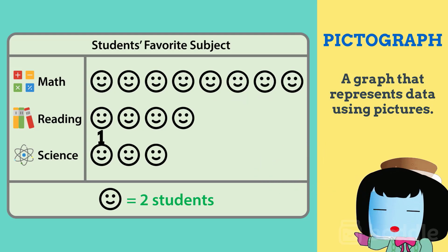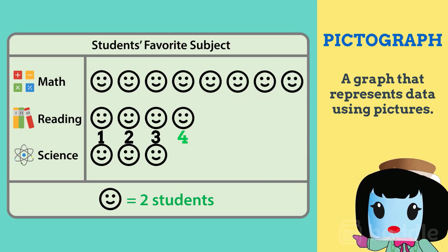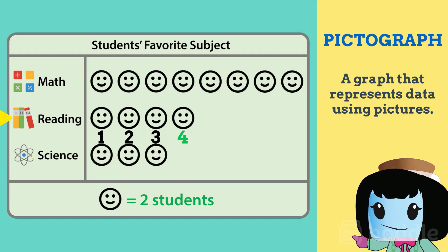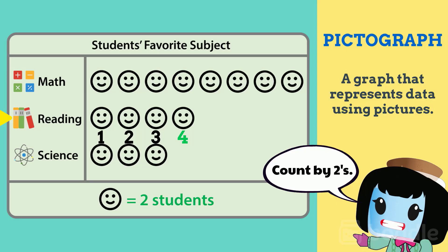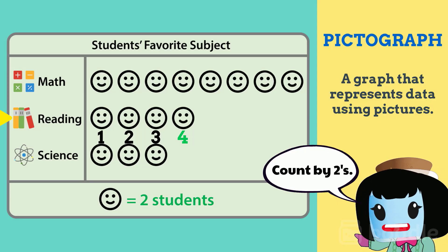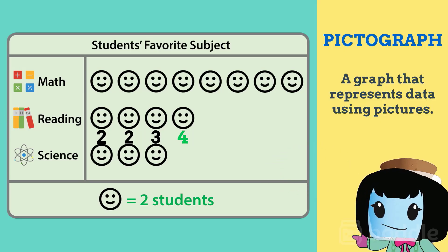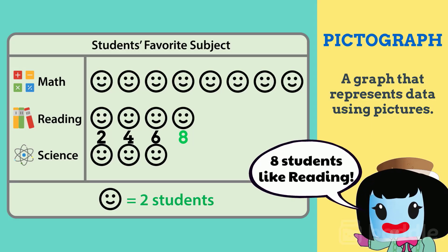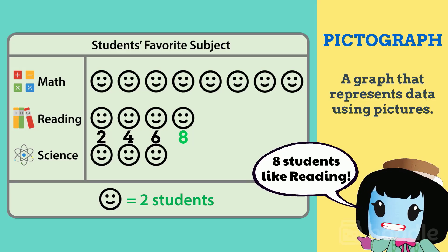There are four smiley faces that represent the number of students who like reading. So how many students like reading? Remember to count by twos: 2, 4, 6, 8. Eight students like reading.